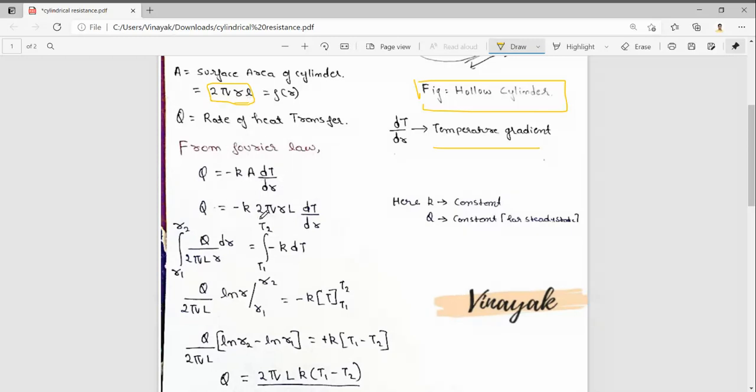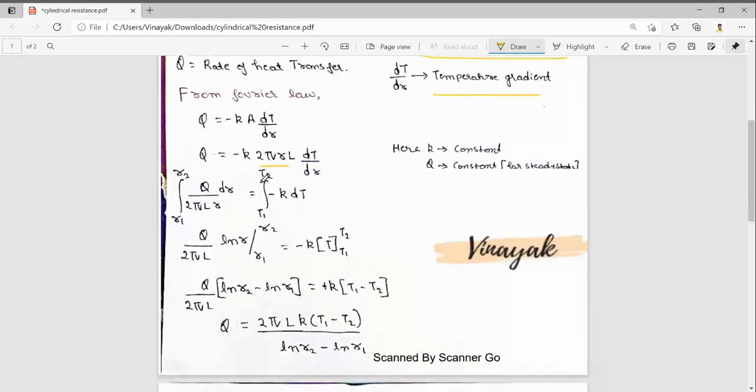Here we substitute 2πRL. We know that K is constant for the material and Q is constant for steady state. By rearranging the equation,